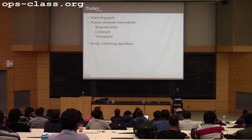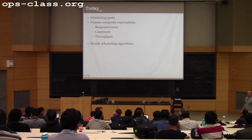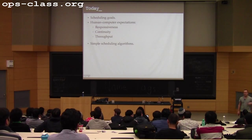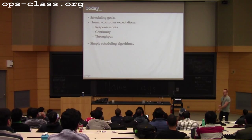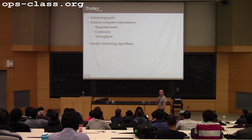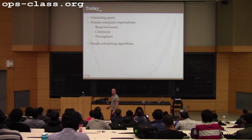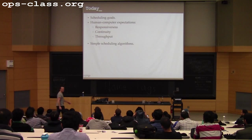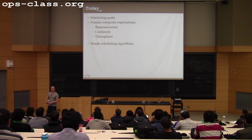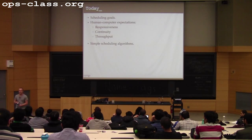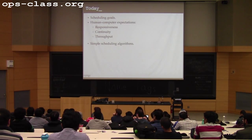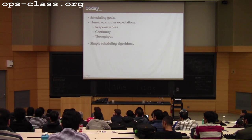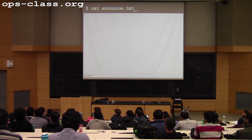Today we'll finish up talking about thread state transitions, and then we'll talk about scheduling. What are the goals of scheduling? What is the OS trying to accomplish? And some of your expectations as computer users as far as interactive scheduling. Then we'll start off talking about scheduling by discussing some really simple, sort of dumb scheduling algorithms that are useful as comparison points when we discuss other schedulers.